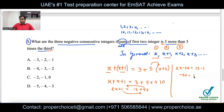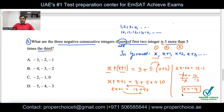Divide both sides by −3. So 12 ÷ (−3) gives x = −4. This is the first number in the pattern.